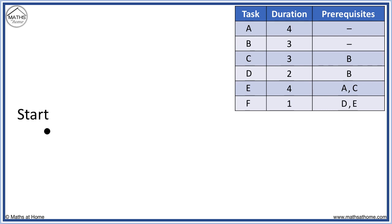From the start of the project, we can only begin tasks that have no prerequisites. That is A and B. We can draw arrows representing tasks A and B coming out of the start node.